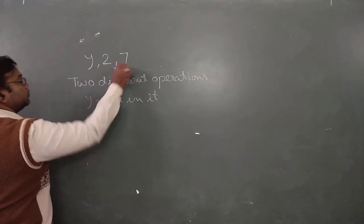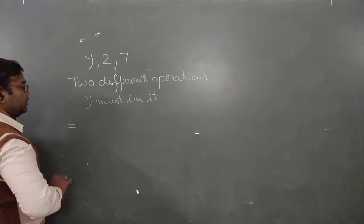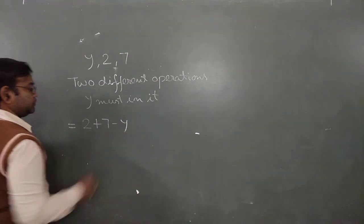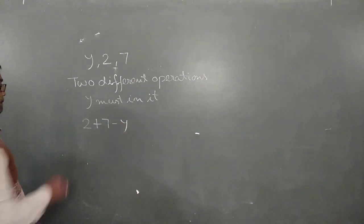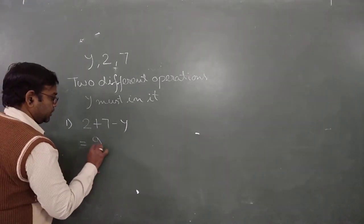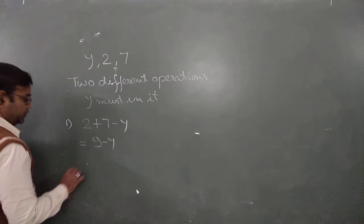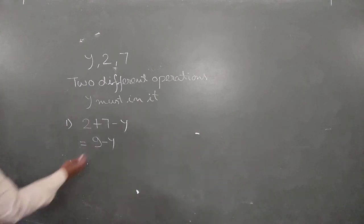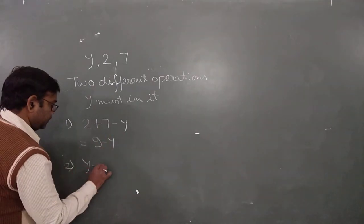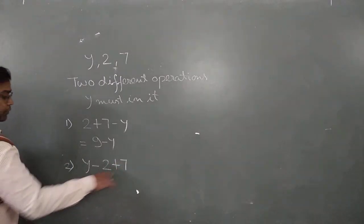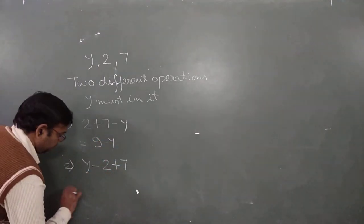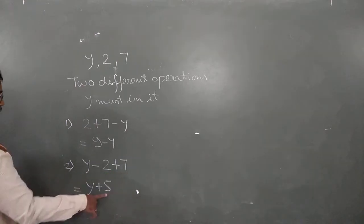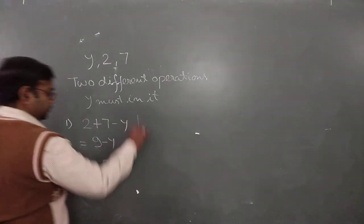First expression: two plus seven minus y, which simplifies to 9 minus y. Second expression: reverse it — y minus two plus seven, which equals y plus 5.